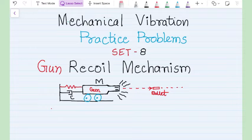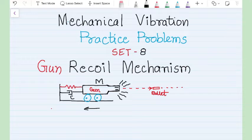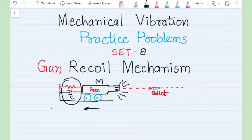In this set we are going to talk about recoiling of a gun and how damping plays an important role in settling the gun back to its original position. This is a typical problem of damped vibration. When the gun fires a bullet, the gun recoils and moves in the backward direction, and because of the spring and damper the system goes back to its original position as quickly as possible.